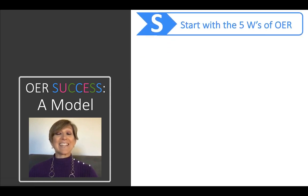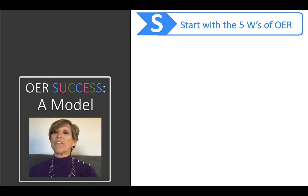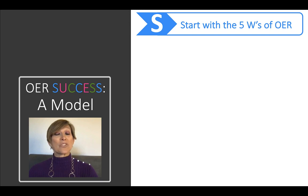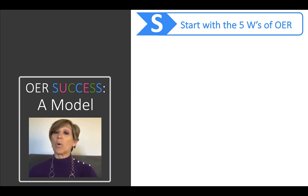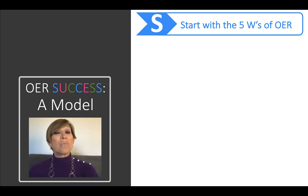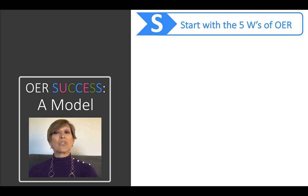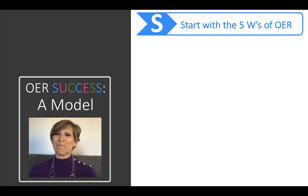I've used an acrostic of the word SUCCESS, with each letter representing the steps for successfully implementing OER. The first S initiates the OER journey: Start with the five W's — not R's — of OER, or the essential questions about OER. What are OER? In what ways are they used? Why are they important? Who benefits from them? And where can they be located? Answers to these questions build the foundation for OER use and implementation.